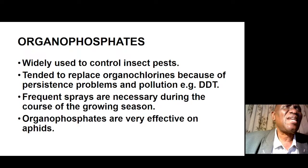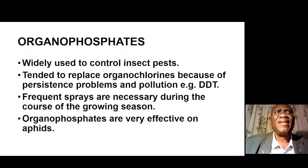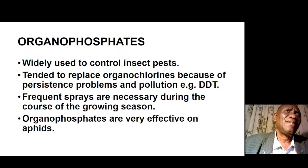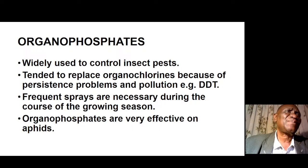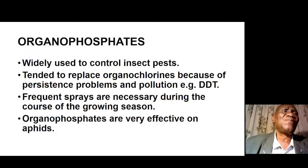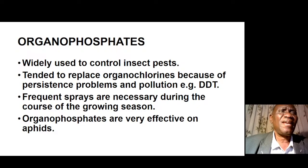Starting with organophosphates: these pesticides are widely used to control insect pests. They tended to replace organochlorines because of resistance problems and the pollution associated with DDT. DDT is an organochlorine and tends to last in the environment for a long time, so people switched to organophosphates. Frequent sprays are necessary during the growing season if using organophosphates because they tend to disappear quickly from the environment. Organophosphates are very effective on aphids.